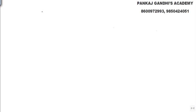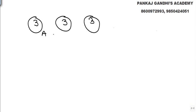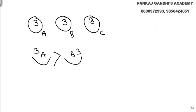Now let's work it out. Nine balls are given — we make groups of three balls each: first group, second group, and third group. Let's call them A, B, and C. We compare any two groups: put one group on one side of the balance and another group on the other side. Let's say A on this side and B on the other side.